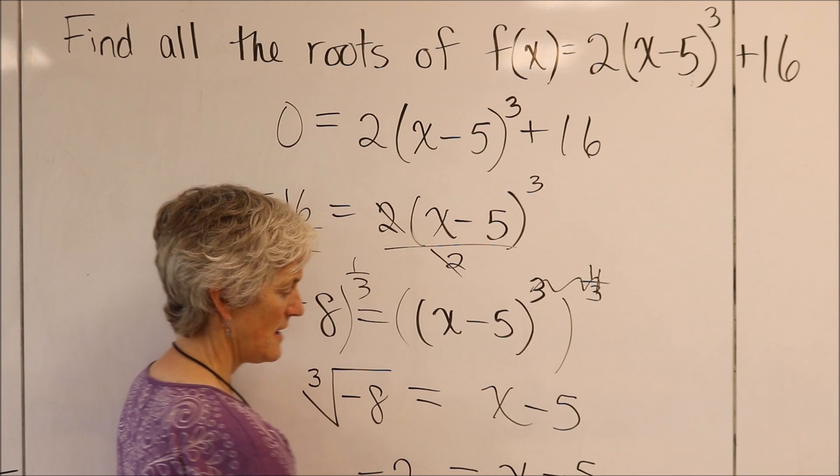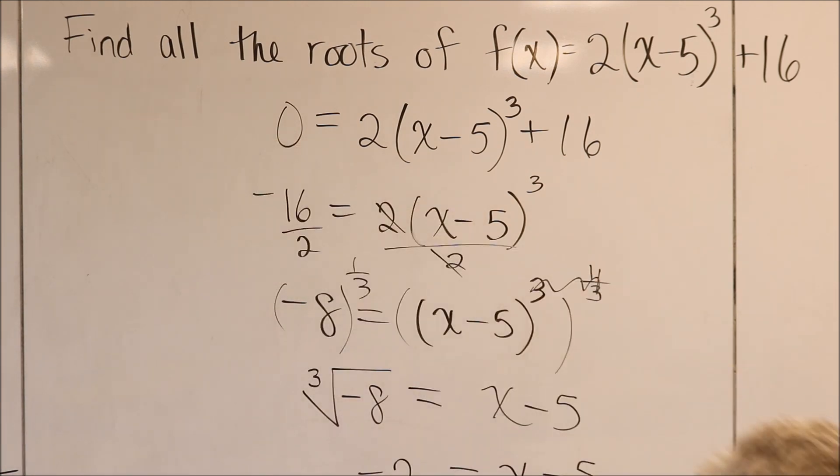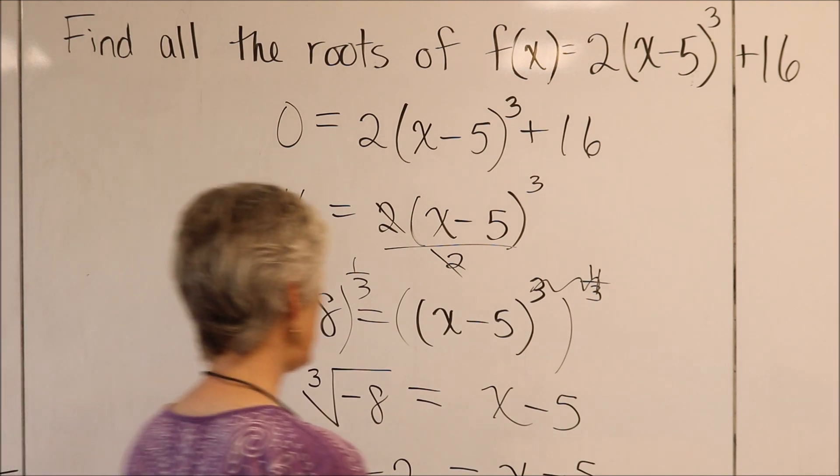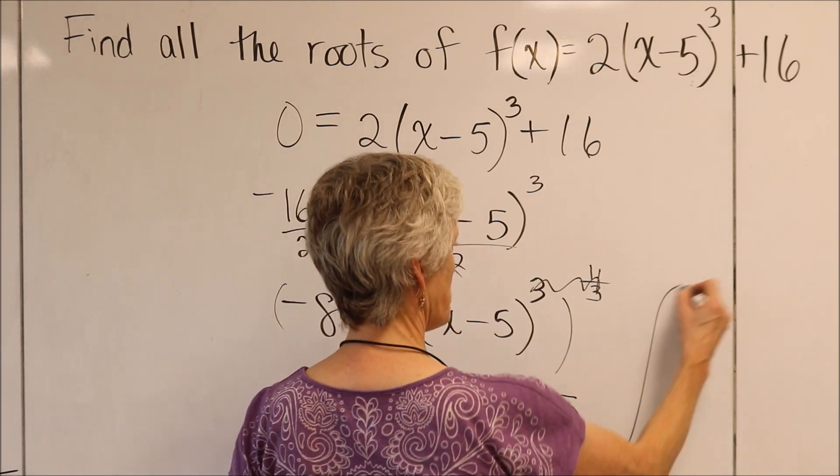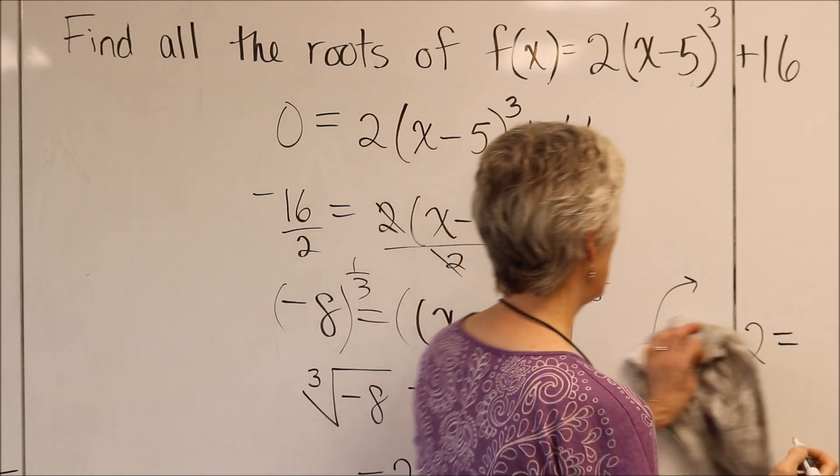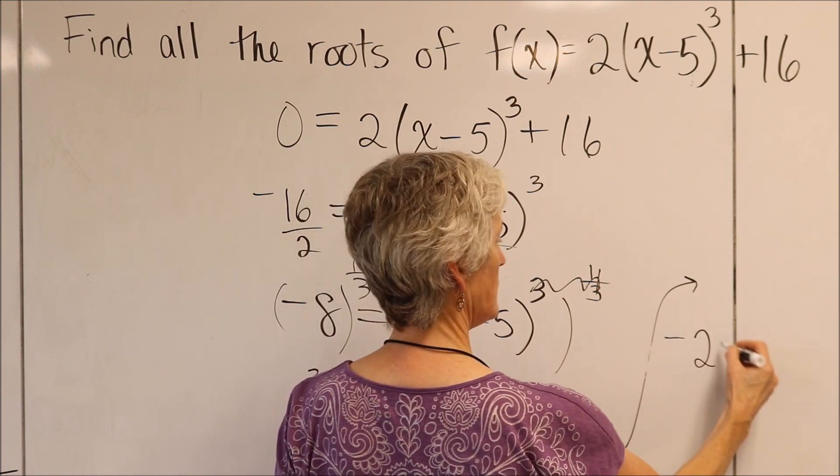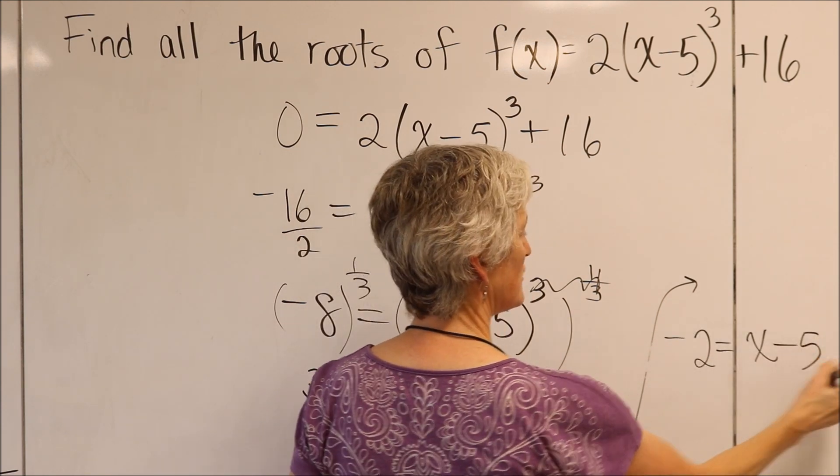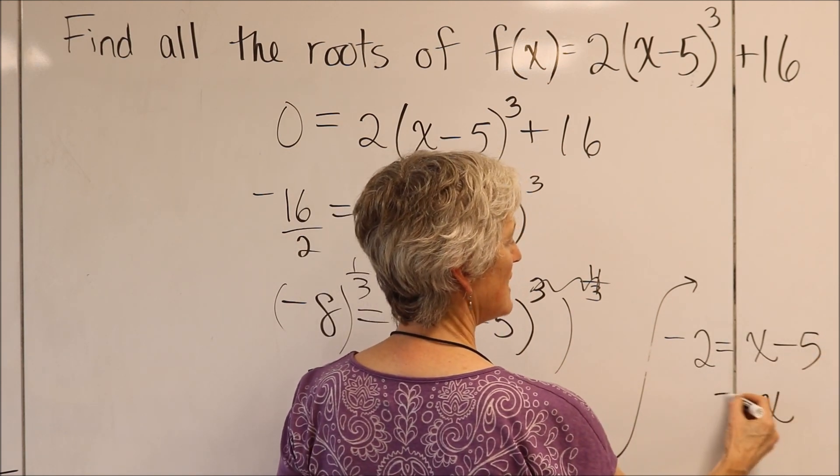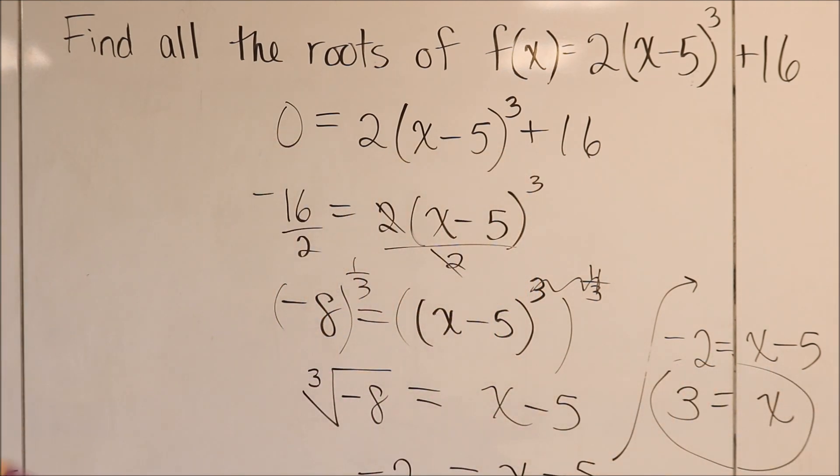And again, isolating my x, and I'm getting a little too low here. So let's bring this up here. So I have negative 2 equals x minus 5. If I just add 5 to both sides, I get x equals 3 as my real root. Can you see all of that? Kind of. Okay, good.